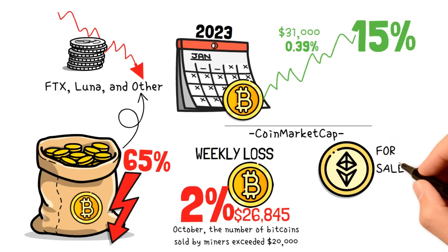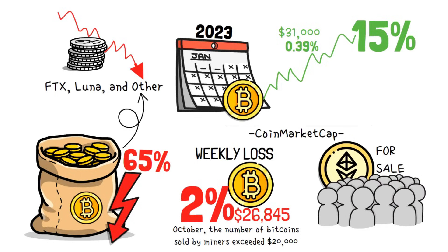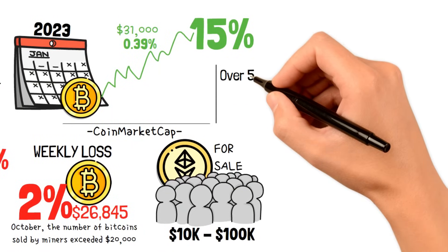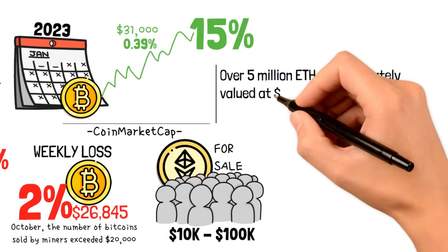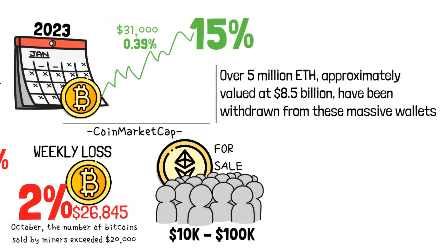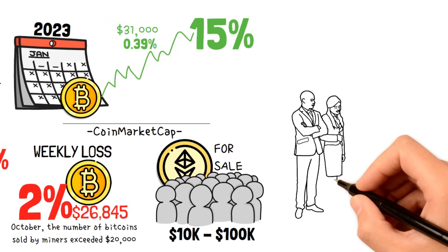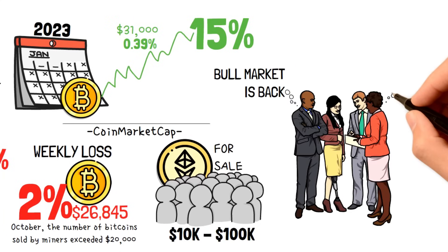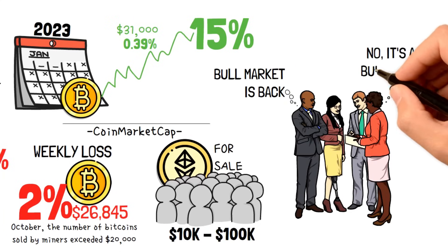To buttress this, Ethereum whales have initiated a trend of selling their holdings, commencing in February. Addresses with a balance ranging from $10,000 to $100,000 in ETH have been actively divesting or redistributing their cryptocurrency during this period. And notably, over 5 million ETH, approximately valued at $8.5 billion, have been withdrawn from these massive wallets. While many enthusiasts are optimistic that the long-awaited bear market is back, many critics are arguing that Bitcoin's recent rally may be a bull trap rather than a sustained upward trend, especially given that Bitcoin is almost halfway down from its all-time high.